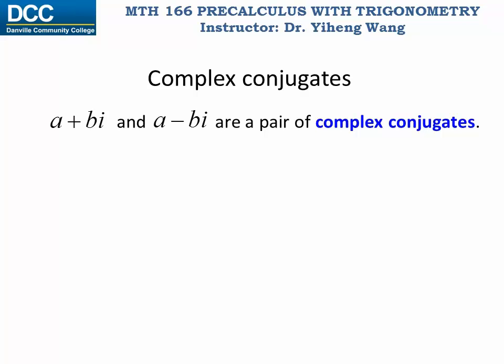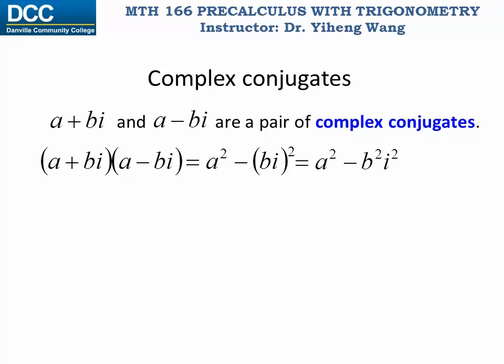Why are they special? Because their product, a plus bi times a minus bi, equals a squared minus b squared times i squared. By definition i squared equals negative one, so this equals a squared plus b squared, which is always a real number.